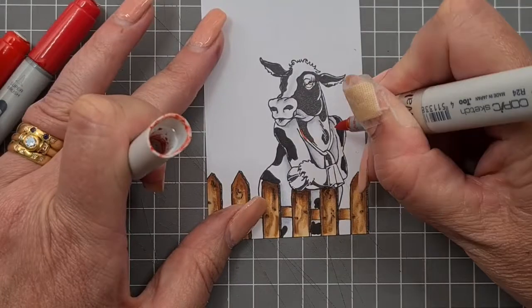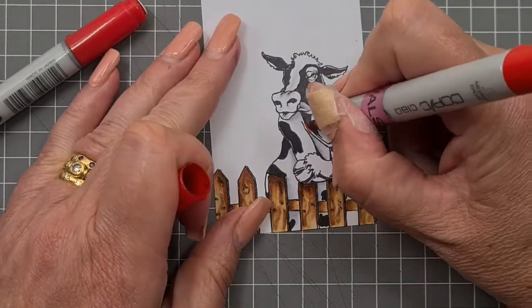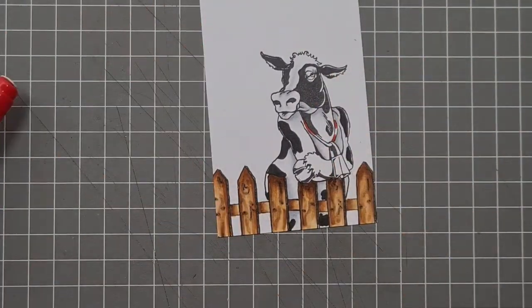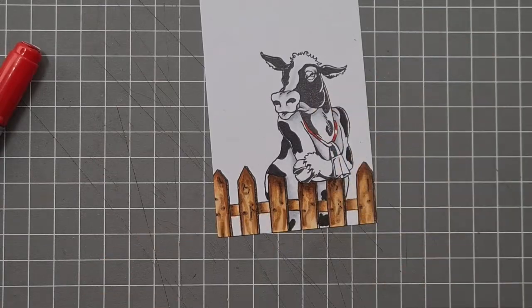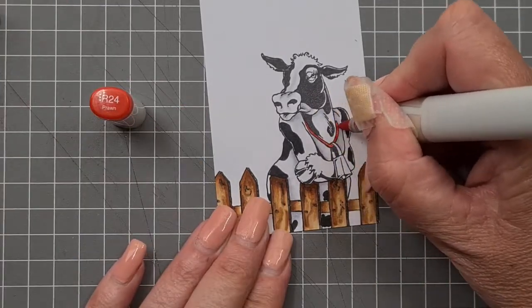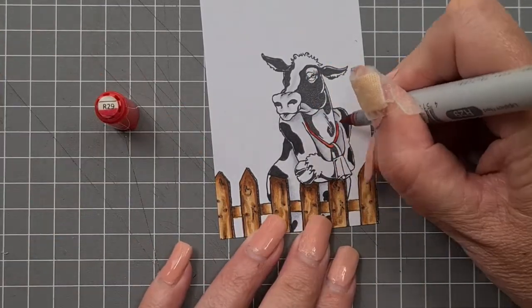We're going to give her a lovely red color. So our reds are R29, R27, and R24.